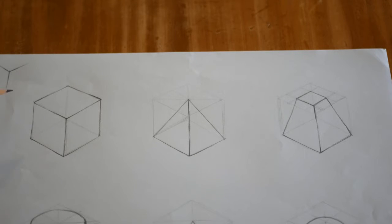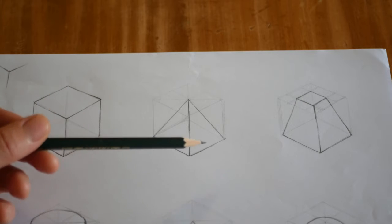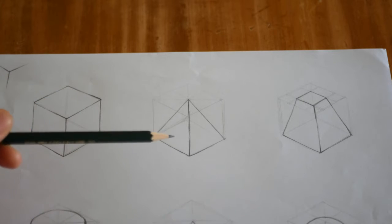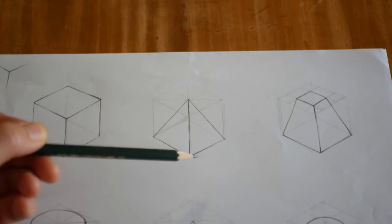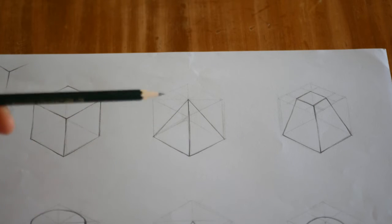Once you're happy with your cube, we're going to move on to a four-sided pyramid. You can see my example here - we've got the cube around the outside and then the pyramid in the inside.